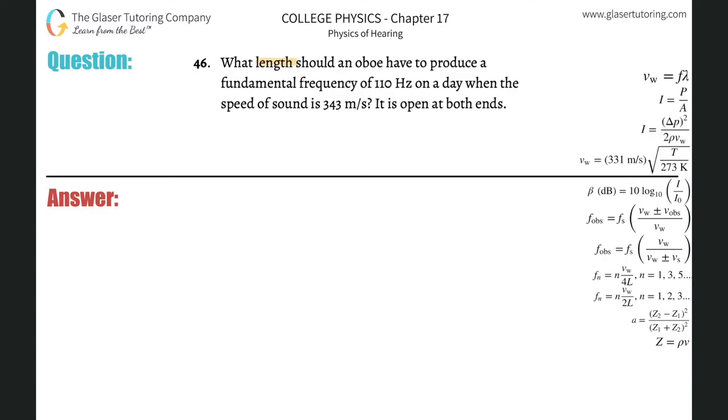Number 46: What length should an oboe have to produce a fundamental frequency of 110 hertz on a day when the speed of sound is 343 meters per second? It is open at both ends.